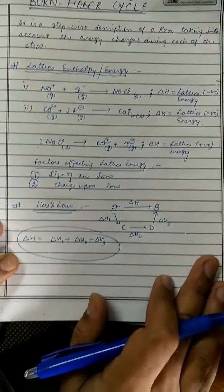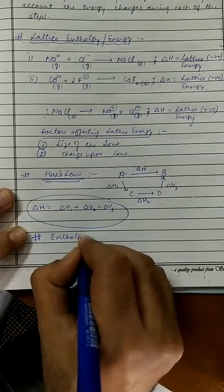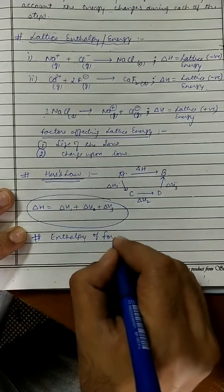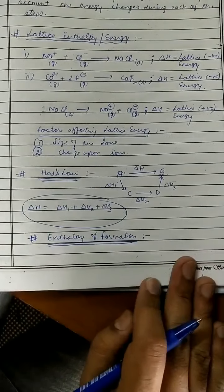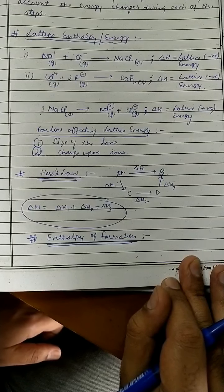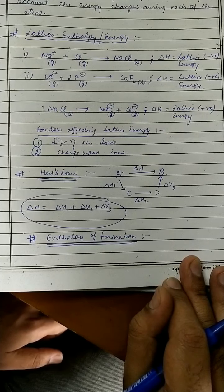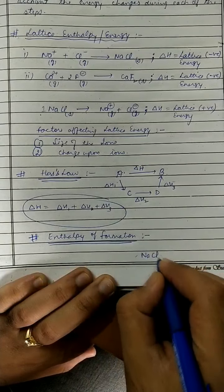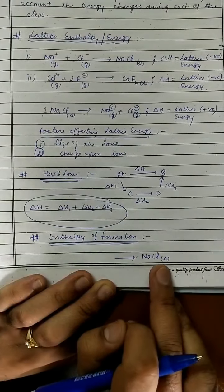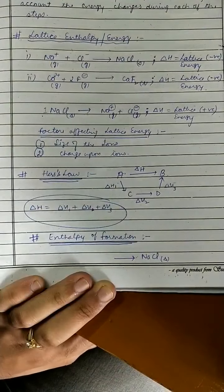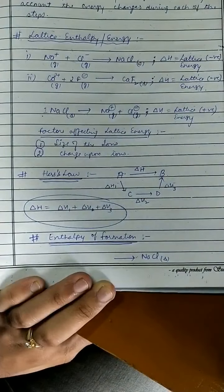एक और important concept — enthalpy of formation। Enthalpy of formation का मतलब है: when one mole of a compound is formed from its constituent elements in their most stable states, the energy change is called enthalpy of formation। जैसे NaCl को मैं Na⁺ और Cl⁻ ions से भी बना सकता हूँ, लेकिन उस process की enthalpy, lattice enthalpy होगी — enthalpy of formation नहीं।